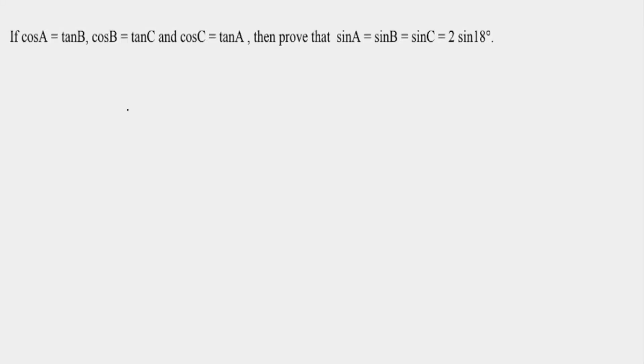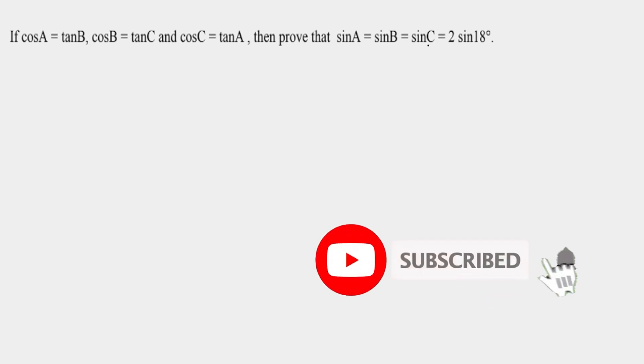Hello everyone, welcome to the second question of trigonometric series. Today's question is: if cos A = tan B, cos B = tan C, and cos C = tan A, then we need to prove that sin A, sin B, and sin C are all equal, and they are equal to 2 sin 18 degrees.